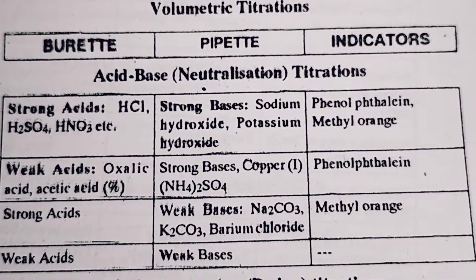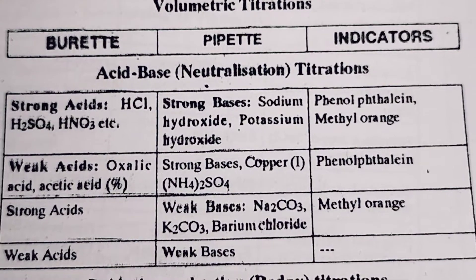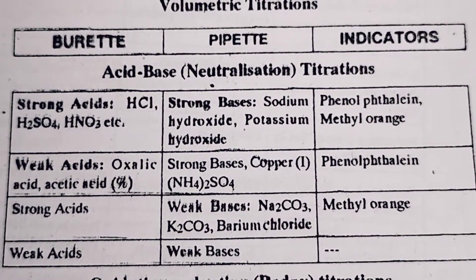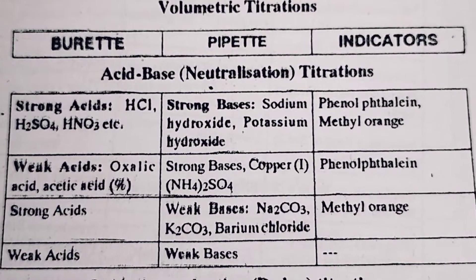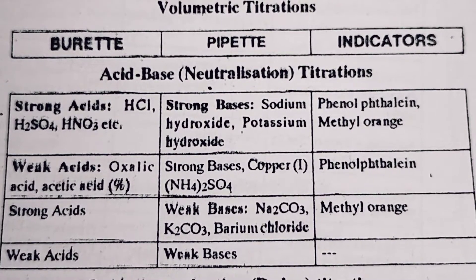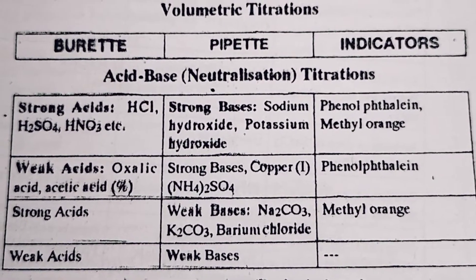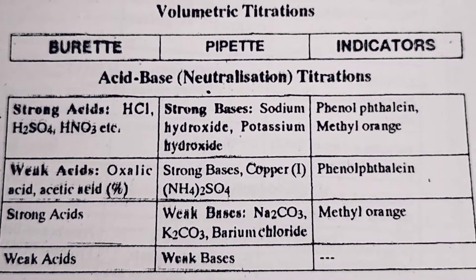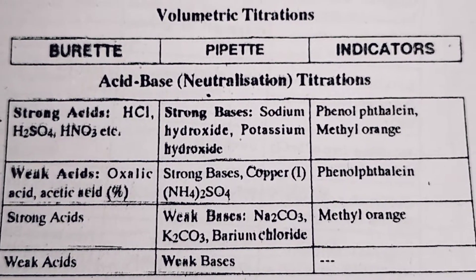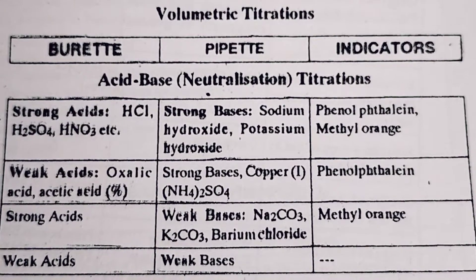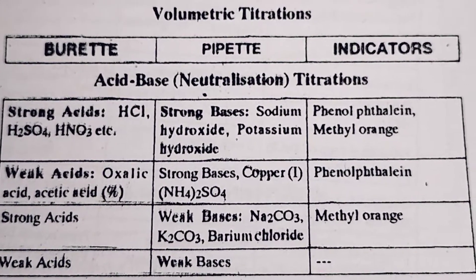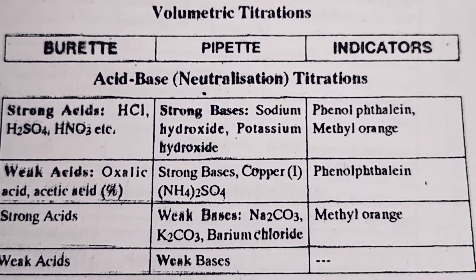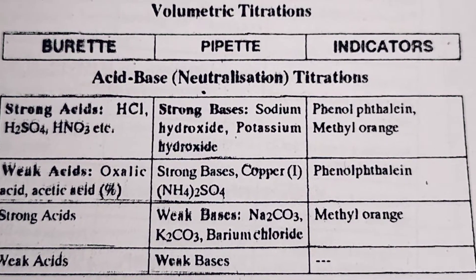We will use a base to make an indicator — methyl orange is used here. Note that weak acid and weak base titration is not commonly used and we do not use any indicator for it. One important thing: phenolphthalein gives a pale pink color at the endpoint.